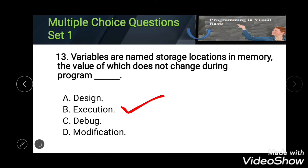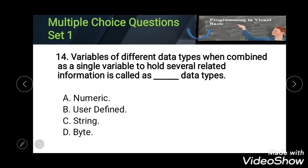Fourteenth: variable of different data types when combined as a single variable to hold several related information is called as blank data types. Options: Numeric, User Defined, String, and Byte. The correct answer is User Defined.